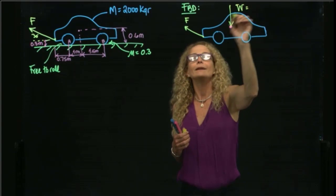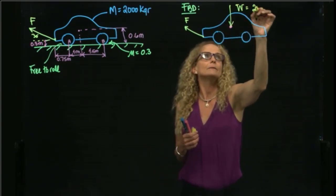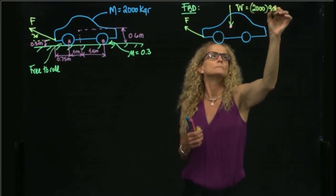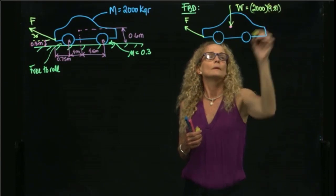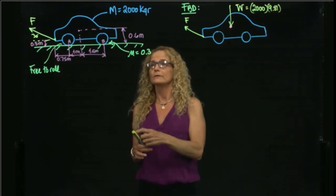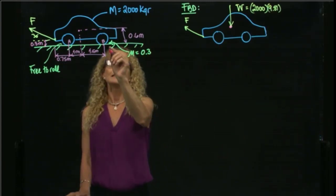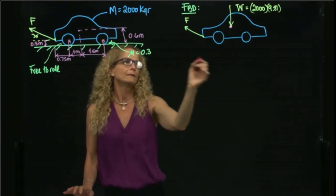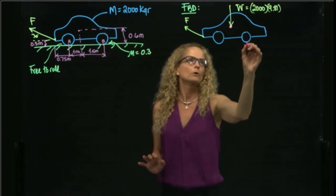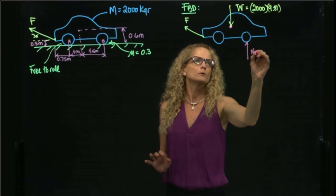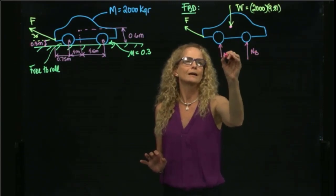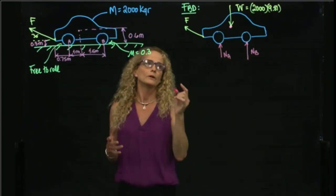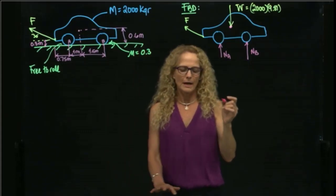The weight is the mass times gravity. Now, since the brakes are placed at wheel B, we have a normal force at B and a normal force at A, but we only have a friction force at B.